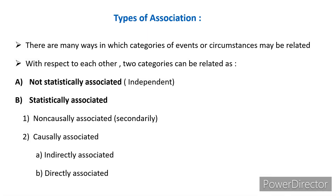Types of association: there are many ways in which categories of events or circumstances may be related to each other. Two categories can be related as either not statistically associated or statistically associated. Under statistically associated, there are two types: causal association and non-causal association. A causal association can be direct or indirect.